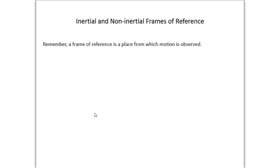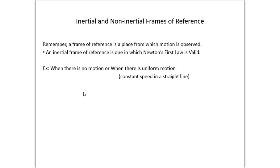What you need to remember, frame of reference is the place in which the motion is observed. An inertial frame of reference is one in which Newton's first law is valid. So from your point of view, Newton's first law is still working. An object in motion wants to stay in motion, and an object at rest wants to stay at rest. So when there's no motion, or when there is uniform motion. So in these cases, you'd have to have constant speed in a straight line if there's uniform motion. Remember, you can't be twisting, turning, slowing down, or speeding up.